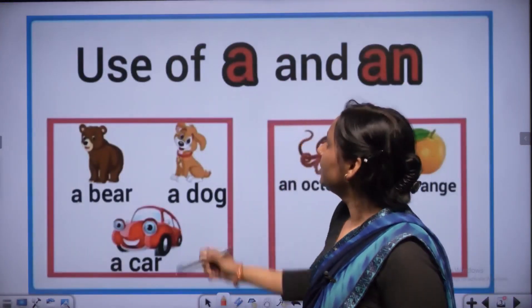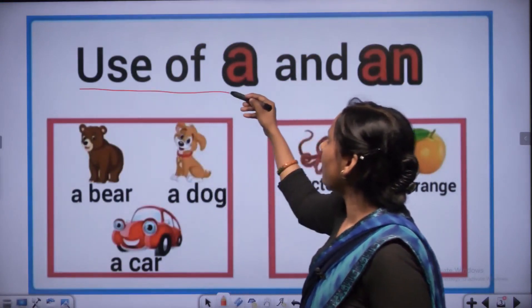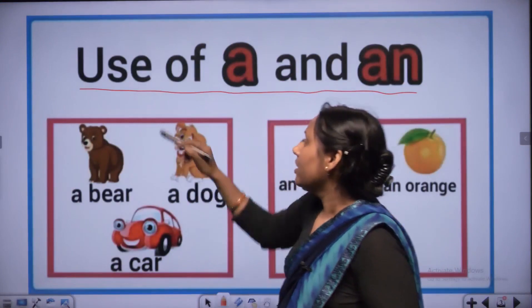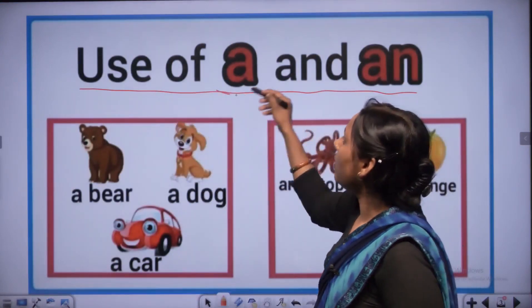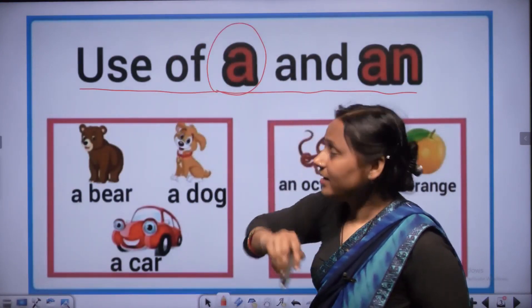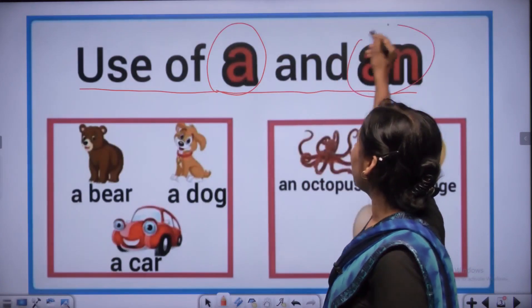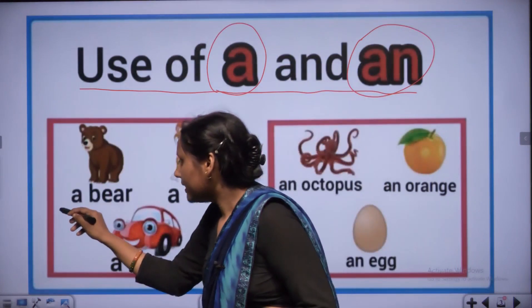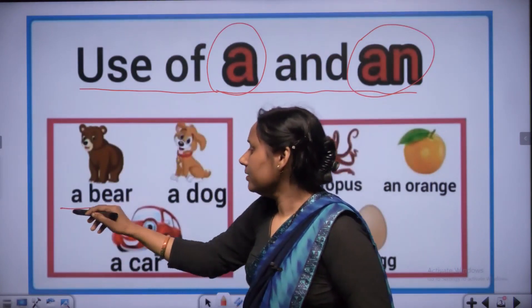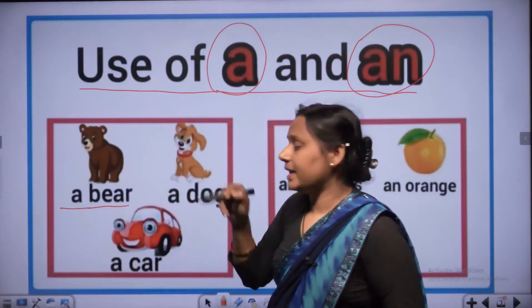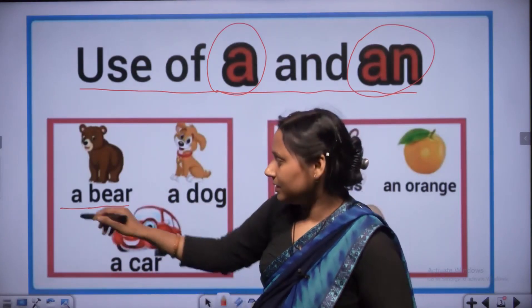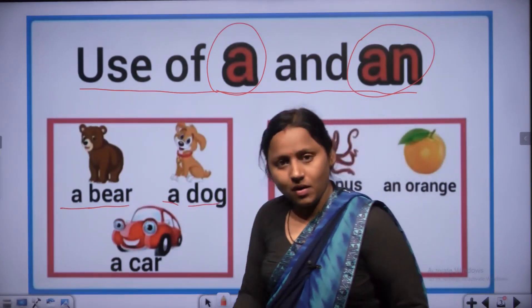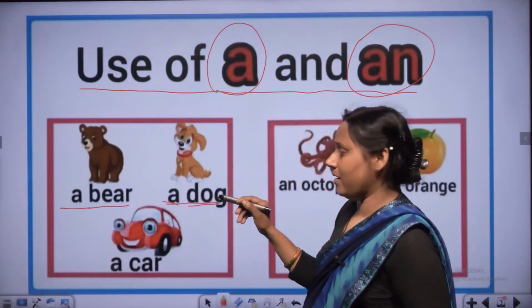First we read use of A and AN. A - B, E, A, R - bear. A bear. A - D, O, G - dog. A dog.